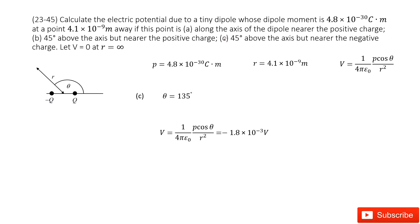The next case is 45 degrees above the axis but near the negative charge. We can draw it - this is P. In this case, theta is 135 degrees. Input P, theta, and R in this function, and we can get the final answer. Thank you.